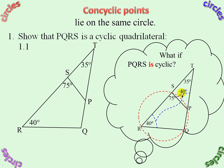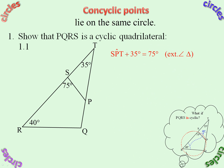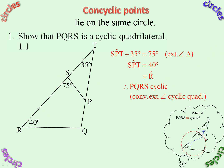So I'd need that equal to that — if this was cyclic, that would be 40 degrees. Let's find that angle: SPT equals 35, subtract from 75, because by the exterior angle of a triangle, that equals that plus that, which gives you 40. So now we have SPT equal to R, and therefore cyclic. Reason: Converse Exterior Angle Cyclic Quad.